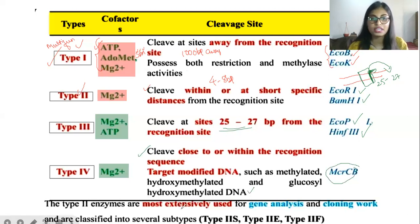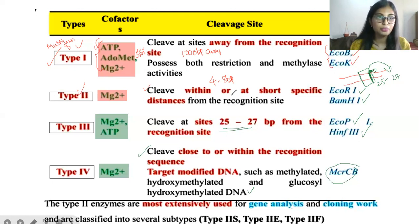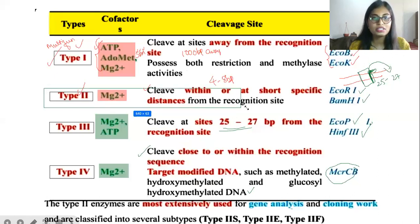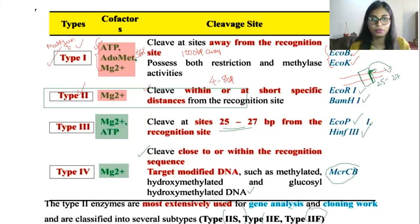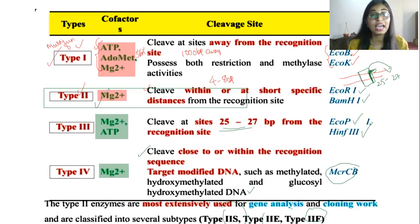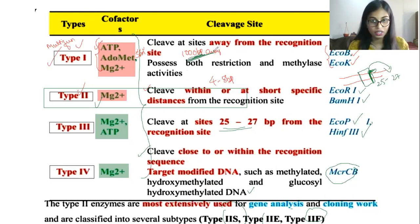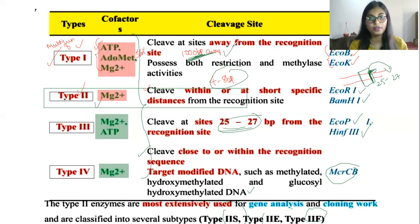Type two restriction enzymes are most extensively used for gene analysis and cloning work. Compared to these four different types, type two restriction endonucleases are widely used and are subclassified into many types like type IIS, type IIE, and others based on function. Among the four types, type two is most extensively used. Type two cleaves very close, type three is 25 to 27 base pairs, type one is more than a thousand base pairs away, and type four targets modified DNA.